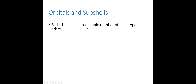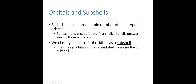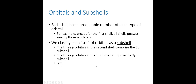Every shell has a very predictable number of each type of orbital. For example, except for the first shell, all other shells — shell 2, 3, and up — have exactly three P orbitals. We classify these sets of orbitals as a sub-shell. So a P sub-shell has three orbitals in it, and we call those three P orbitals. We label these as the 2P sub-shell for shell two, the 3P sub-shell for shell three, the 4P sub-shell for shell four, and so on.